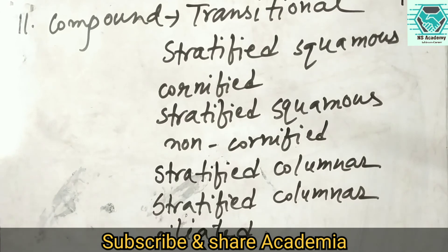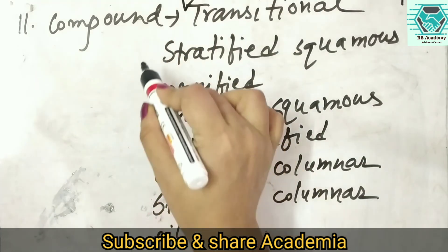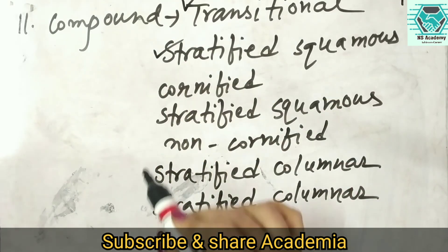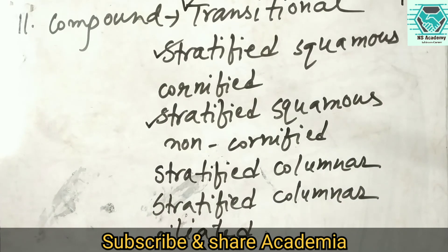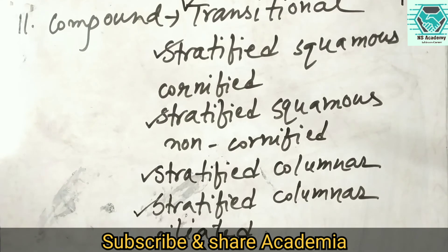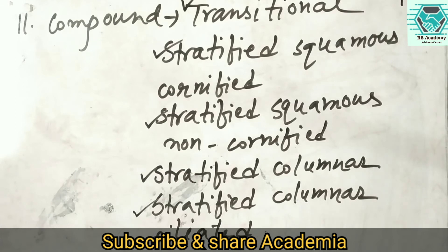Compound epithelial tissue is also subdivided into five categories: number one is transitional, number two is stratified squamous cornified, number three is stratified squamous non-cornified, number four is stratified columnar, and number five is stratified columnar ciliated. All five categories of compound epithelial tissue are made up of more than one layer of epithelial cells upon a basement membrane.